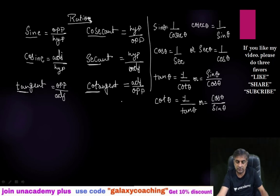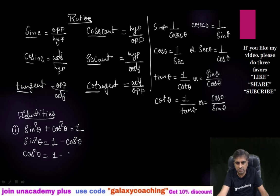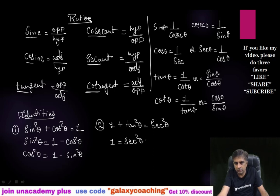These are the relationships between the ratios. Now let us learn the identities. First identity: sin²θ + cos²θ = 1. You can also write sin²θ = 1 − cos²θ, or cos²θ = 1 − sin²θ. Second identity: 1 + tan²θ = sec²θ. So you can also write 1 = sec²θ − tan²θ, or tan²θ = sec²θ − 1.